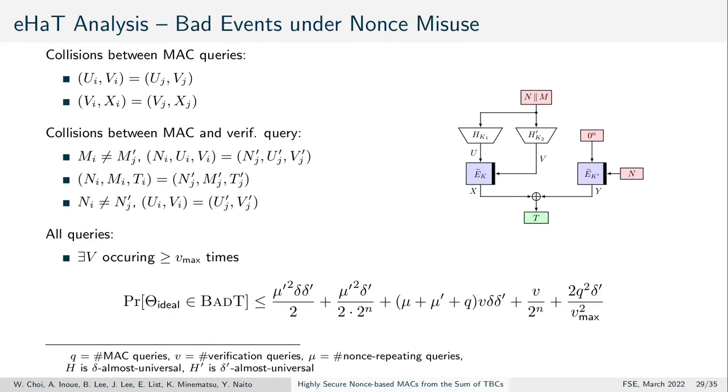Under nonce misuse, we considered six bad events in total that were collisions between MAC queries, collisions between MAC and verification queries in hashes or the tag, and an upper bound that too many values v occurred.